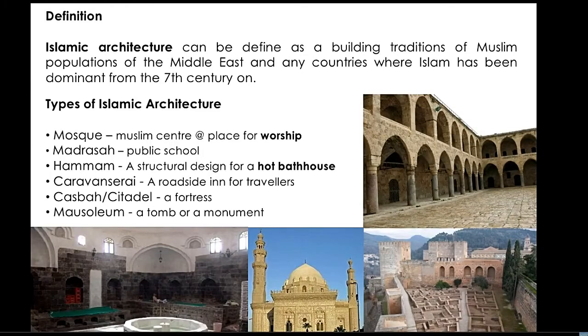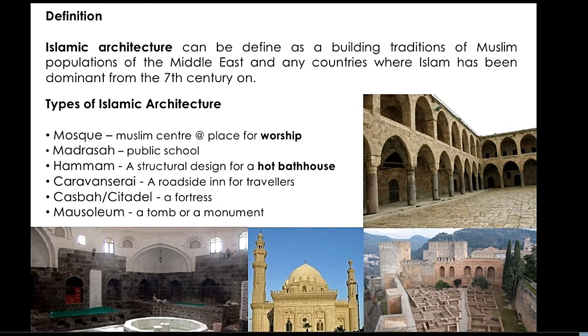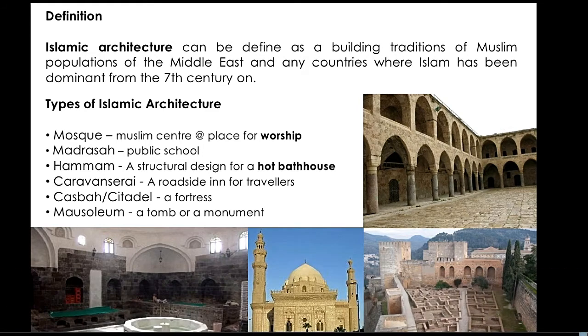Definition: Islamic architecture can be defined as the building traditions of Muslim populations in the Middle East and any countries where Islam has been dominant from the 7th century onward.